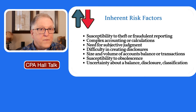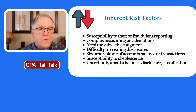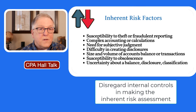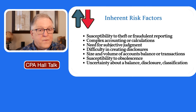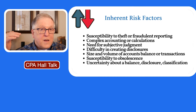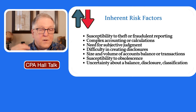When you look at the relevant assertions for a particular account balance or transaction class, ask whether these factors are in play. If they are relevant, your inherent risk is higher. One important point: you want to disregard internal controls as you determine your inherent risk assessment level. If you've got areas susceptible to theft such as inventory or cash, or if there's complexity, subjectivity, or uncertainty at a high level, then your inherent risk is going to go up.